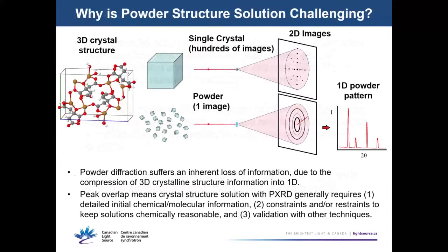We talked yesterday about how you lose a lot of information in a powder pattern because you're collapsing 3D structure down onto one dimension. Peak overlap makes powder diffraction very challenging compared to single crystal diffraction. Because of this loss of information, things like detailed chemical knowledge are more important upfront, you'll often need constraints and restraints to keep solutions chemically reasonable, and you'll want validation with other techniques.